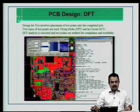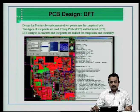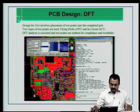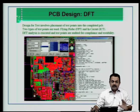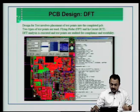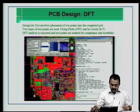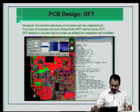Design for testability: design for test involves placement of test points into the PCB. You have to decide what types of test points you should have — one is in-circuit testing and the other is a flying probe test. If it is going to be equipment-based, then your placement has to be well suited for accessibility to your flying probe tester. DFT analysis is executed and test points are audited for compliance and testability.